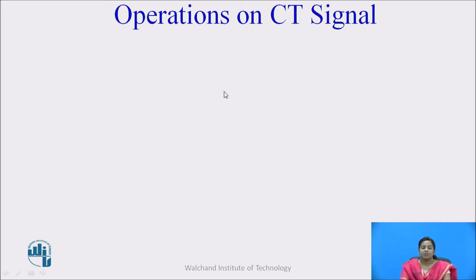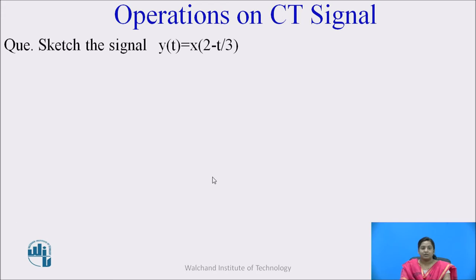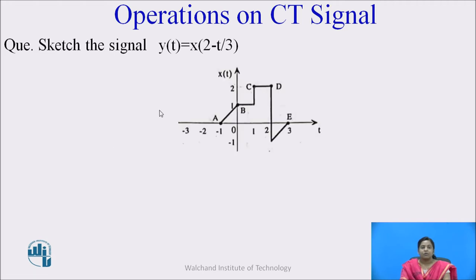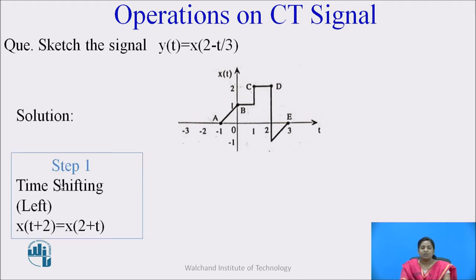Now let us see the examples related to these basic operations on CT signals. Sketch the signal y(t) = x(2 - t/3), where the signal x(t) is given. Let us see the steps to solve this.